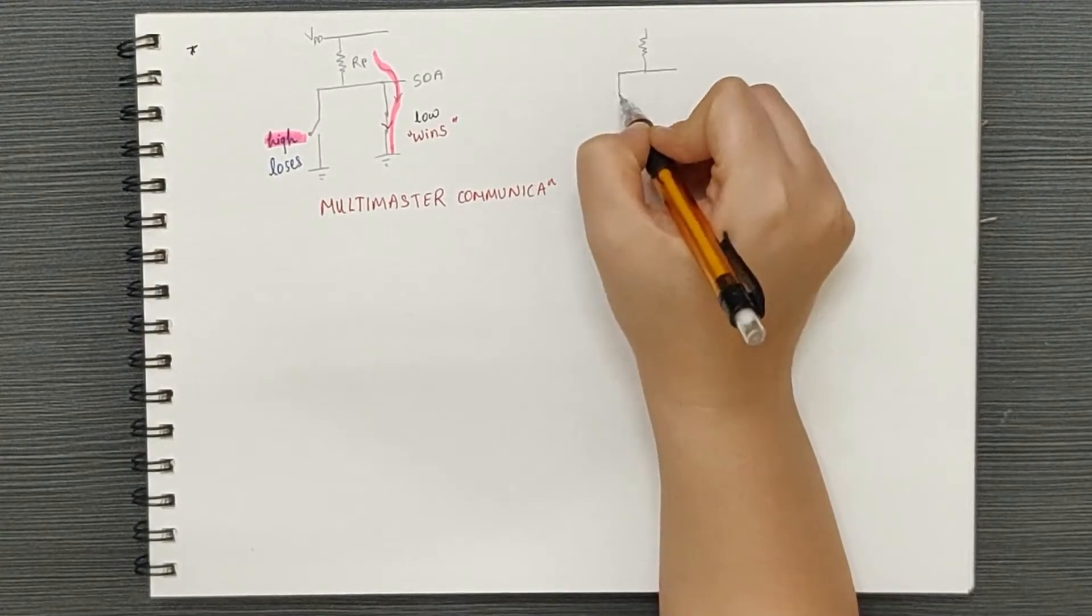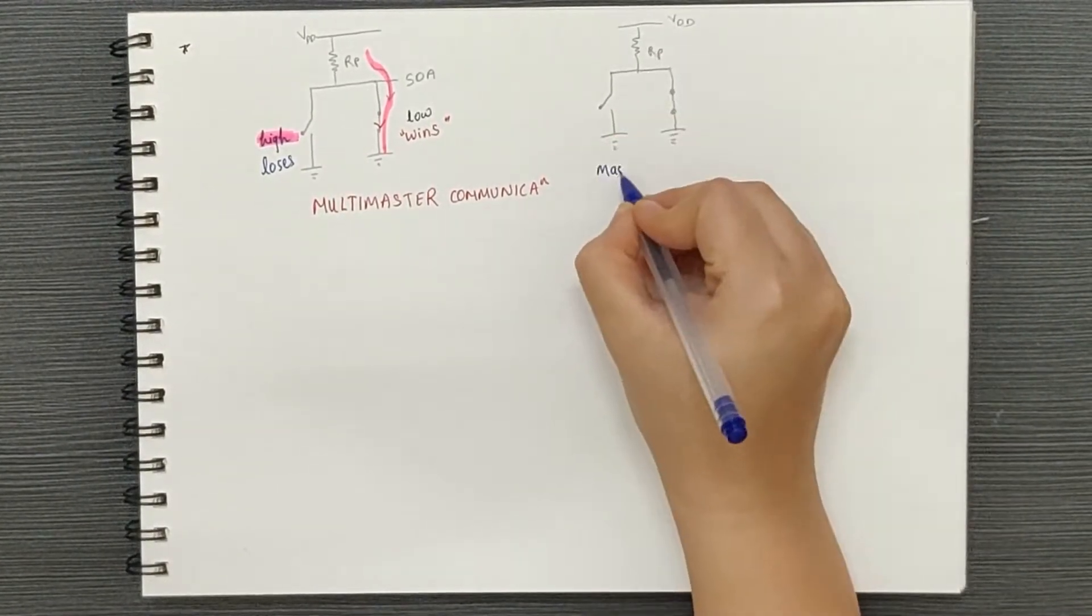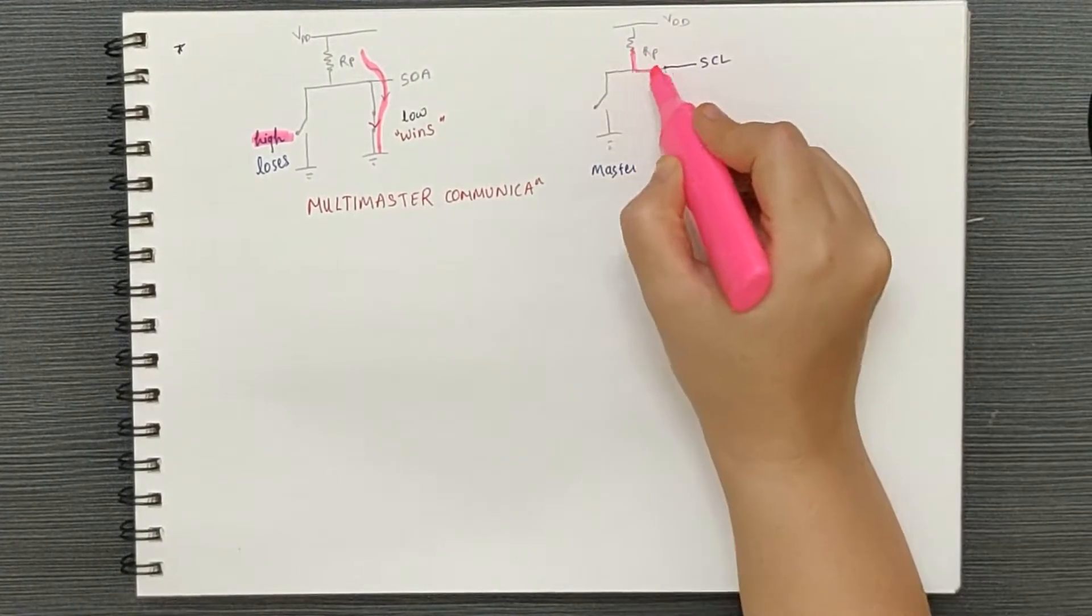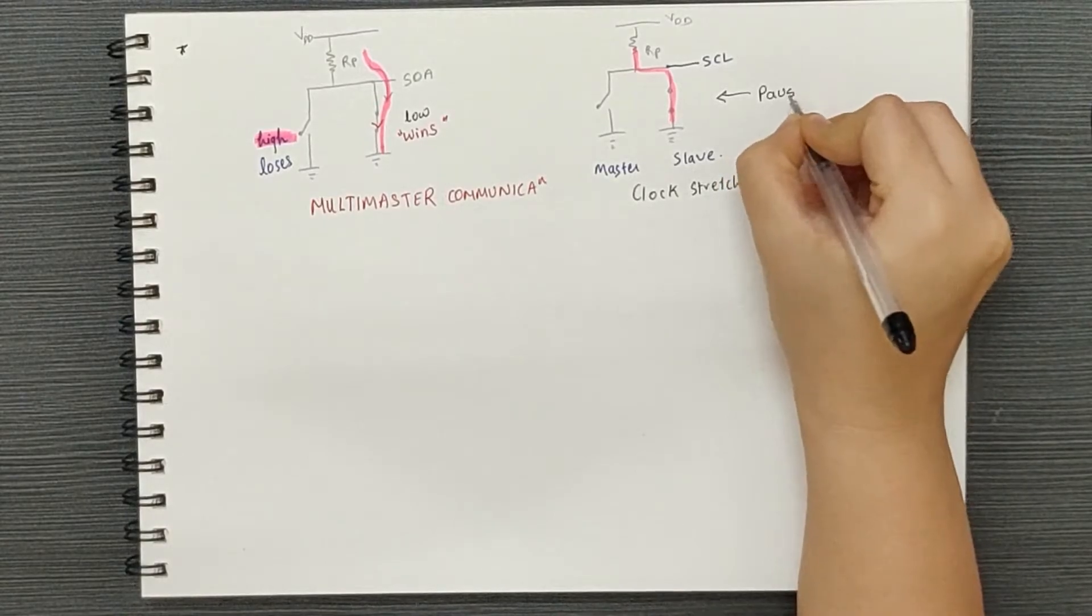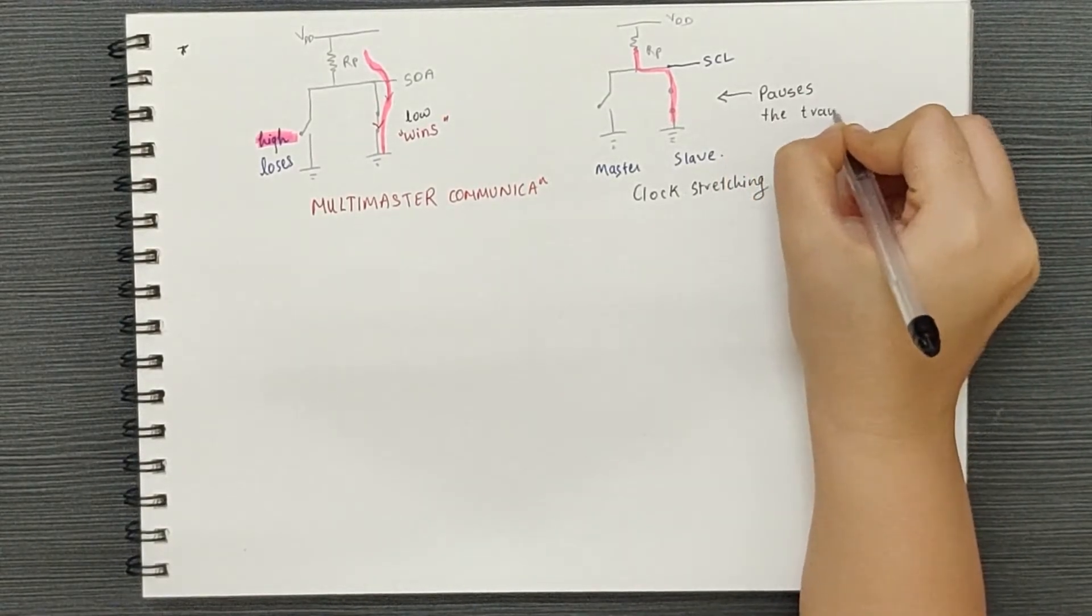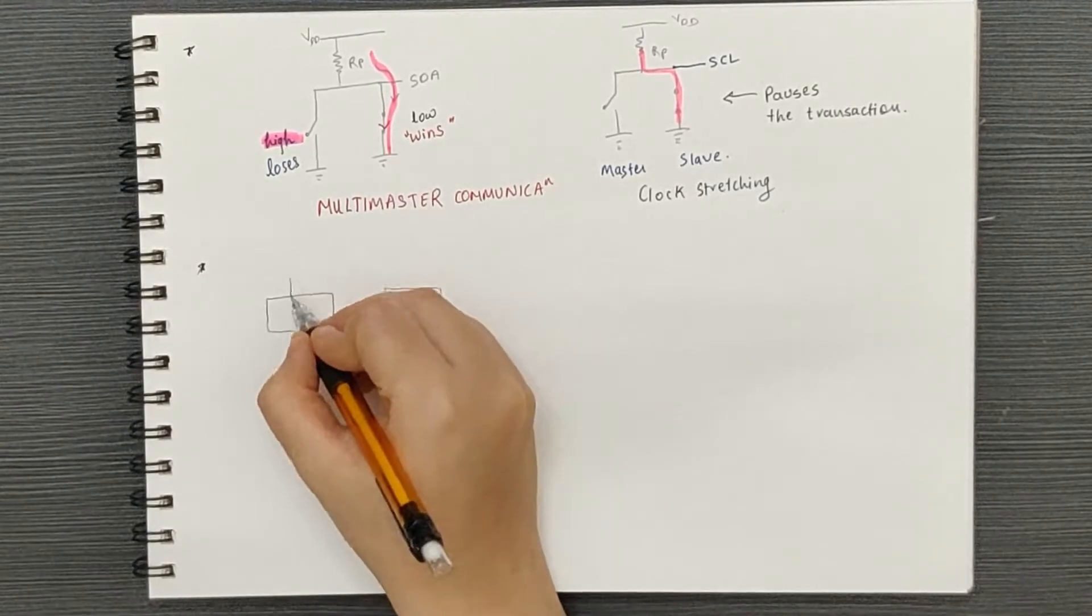Additionally, due to the very same implication, clock stretching is also possible where even though the master generates the SCL, the slave device can hold the SCL line low thereby pausing the transaction. Also, due to open drain,